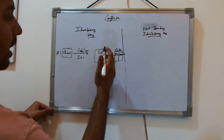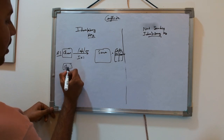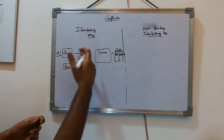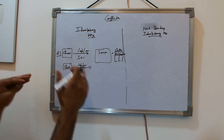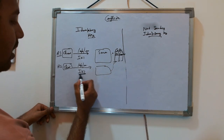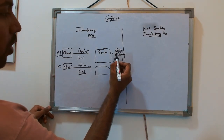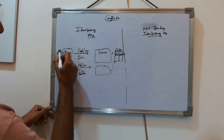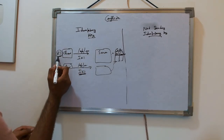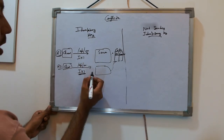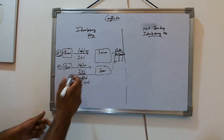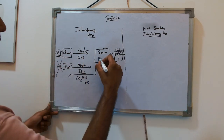Now, while the server is working on request one, if the client makes another call to the same API with the same idempotency key — perhaps due to a network problem — the server first checks if that key is already present in cache. If the key is present and the status is 'created', it means the first request is still in progress, so this duplicate request cannot be entertained and the server returns a 409 conflict.